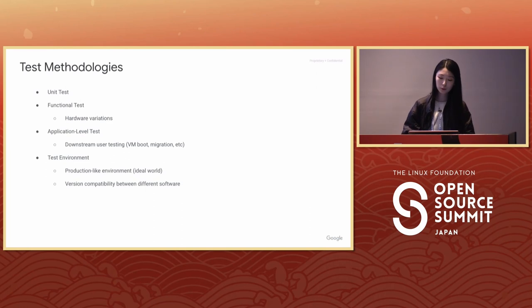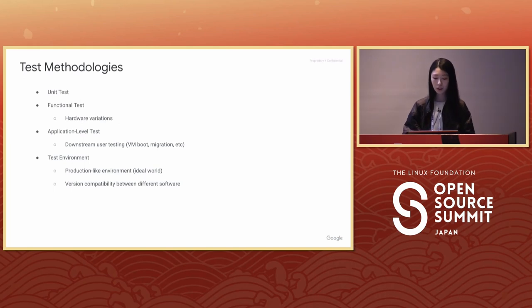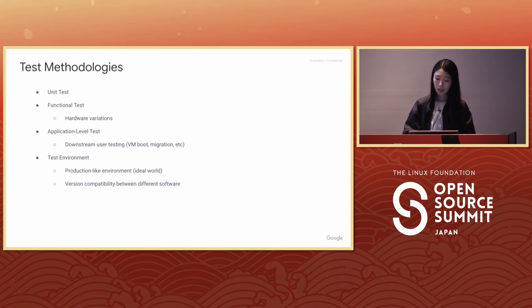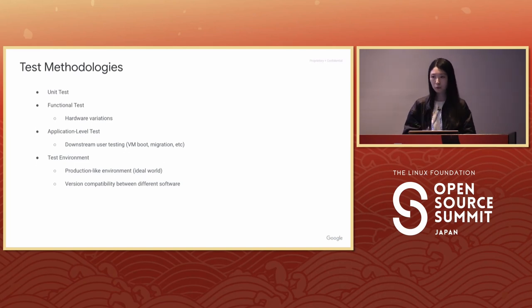When it comes to qualification, we have to think about both functional and performance aspects. We can verify functionalities by running smoke tests, unit tests, and all those sorts of tests mentioned. But for performance, it's a lot more dynamic and can sometimes be affected by multiple dimensions, which is why we put kernel qualifications through multiple different environment characteristics.